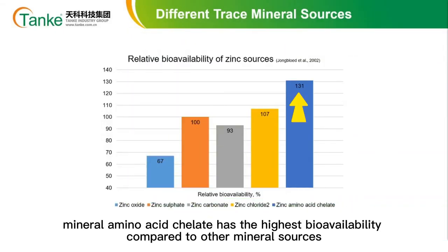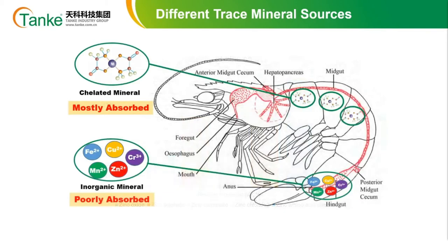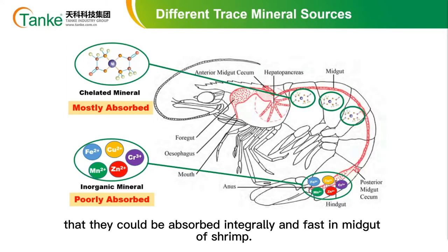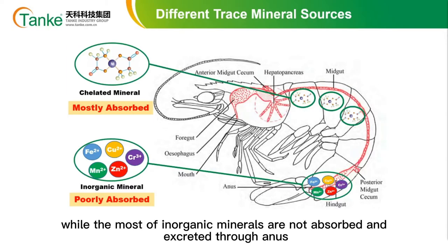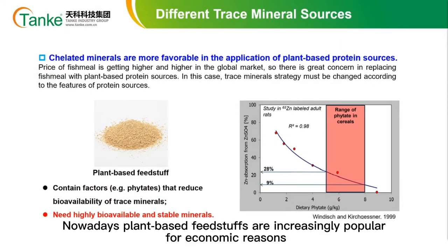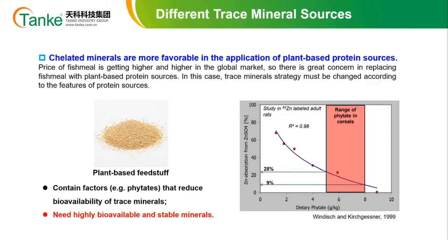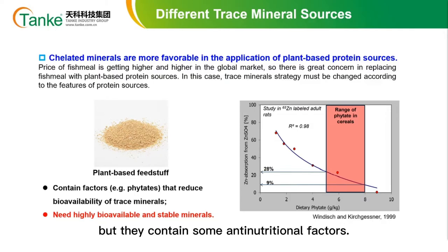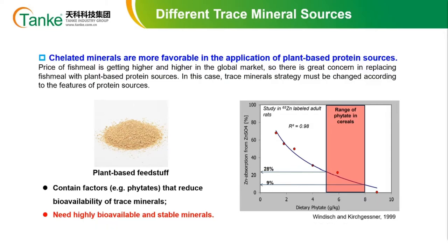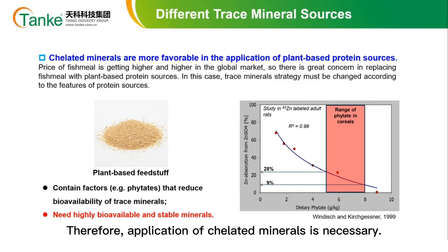This is a study indicating that mineral amino acid chelate has the highest bioavailability compared to other mineral sources. The molecular weight of chelated minerals is so small that they can be absorbed integrally and rapidly in the midgut of shrimp, while most inorganic minerals are not absorbed and are excreted through the anus. Nowadays, plant-based feedstuffs are increasingly popular for economic reasons, but they contain anti-nutritional factors — for example, phytate binds with mineral ions and makes them unabsorbable. Therefore, application of chelated minerals is necessary.